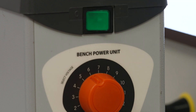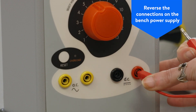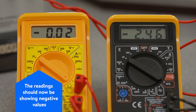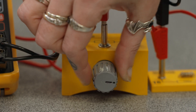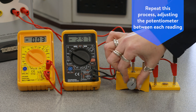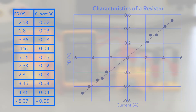Turn off the bench power supply and reverse the connections. The readings on the meters should now be showing negative values. Reset the potentiometer and repeat the process of taking readings from the multimeters, adjusting the potentiometer slightly in between each of the readings. Plot the values of current and potential difference voltage onto a graph. The line of best fit is drawn through the points and the origin. This line is the characteristic of a resistor and shows that the resistor is an ohmic conductor which has a constant resistance and therefore obeys Ohm's law.